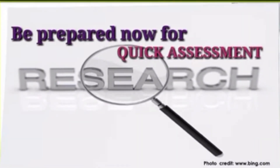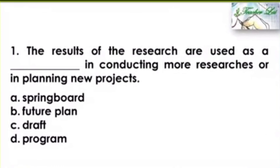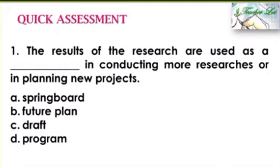Before we end our learning session today, please answer this quick assessment. Get your pen and paper. Listen carefully — I will read the questions and choices. Number one: the results of research are used as a blank in conducting more researches or in planning new projects. Letter A, springboard. Letter B, future plan. Letter C, draft. Or letter D, program. Number two: research undertakings are basically geared toward improving the blank. Letter A, quality of life. Letter B, quality of self. Letter C, program. Or letter D, history.